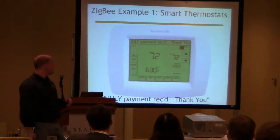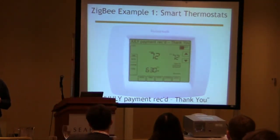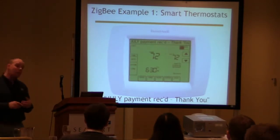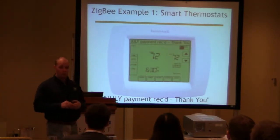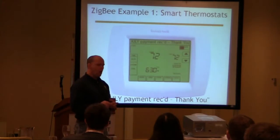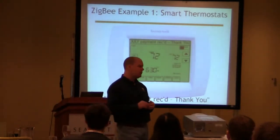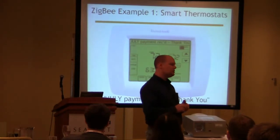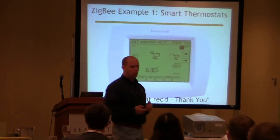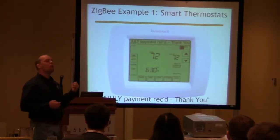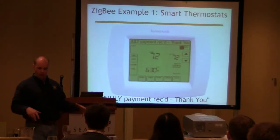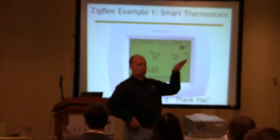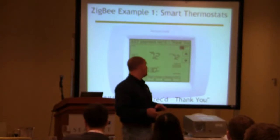"July payment received. Thank you" is what the utility is telling you in this particular smart meter. That's coming to a home near you very soon. We're already seeing it massively deployed in California and many other places throughout the United States. Zigbee is what we call the home area network there, connecting your utility meter to your thermostat, and then to appliances inside your house.